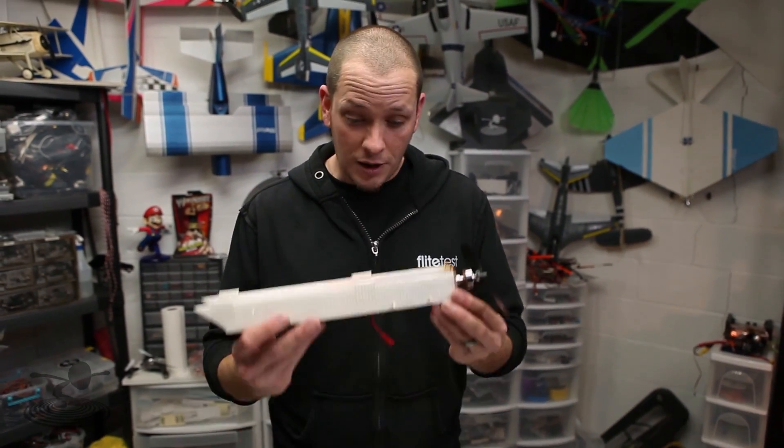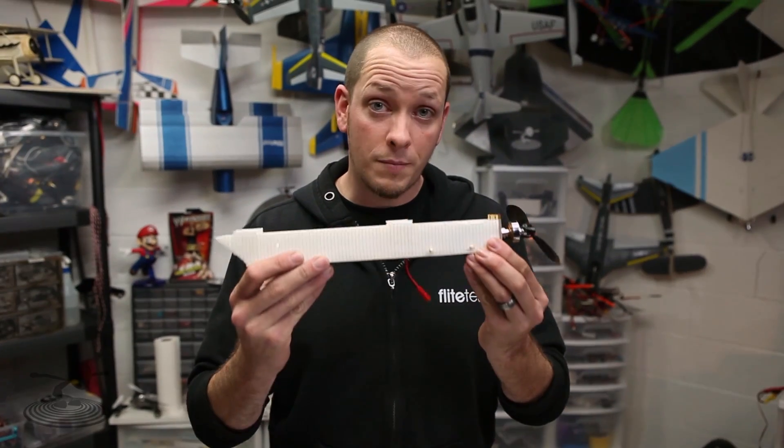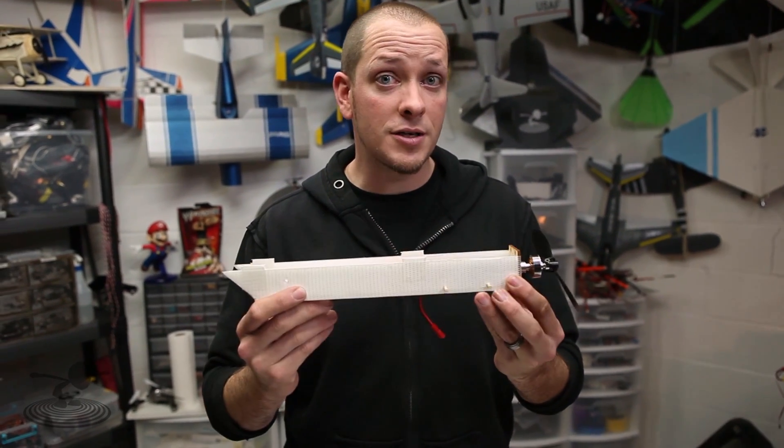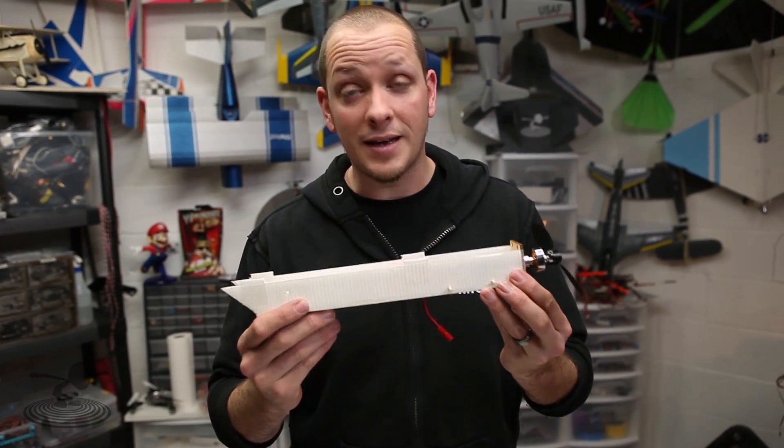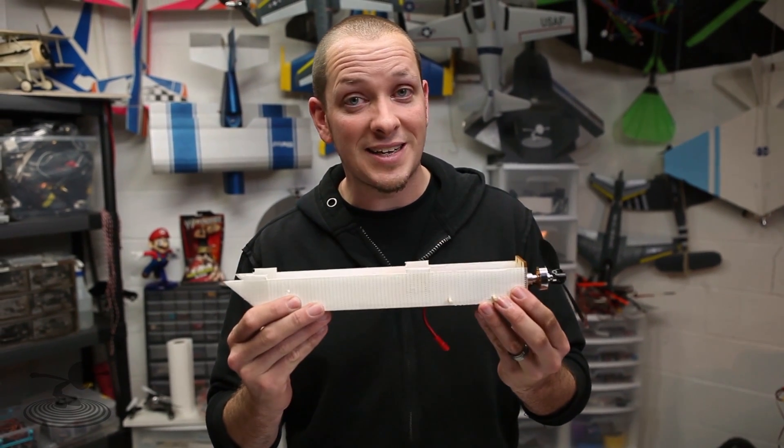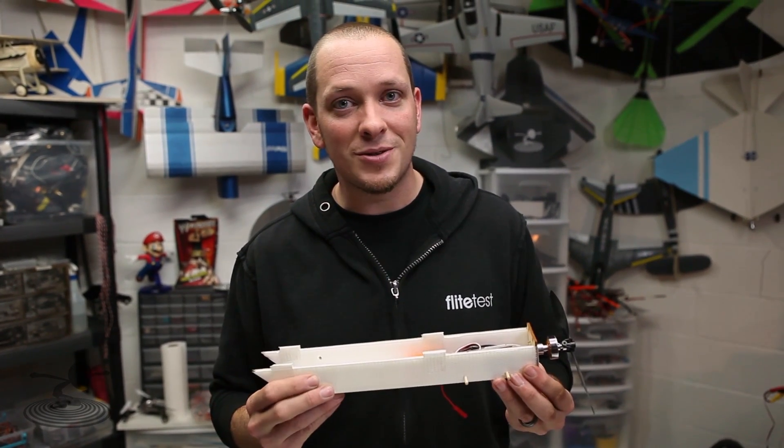Before we build the airframe, we're going to want to build our PowerPod. This is going to go from airplane to airplane. It's going to be very important because everything attaches to it. If you haven't already constructed it, in the description is a link that takes you to the build video of the PowerPod. Build this first because everything is going to attach to it. Then go ahead and get your materials in order and we'll get started.